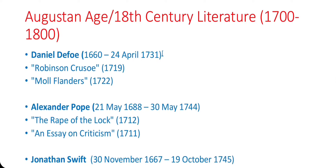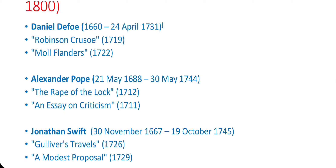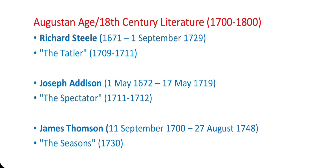Important writers from this age: Daniel Defoe — Robinson Crusoe (1719), Moll Flanders (1722). Alexander Pope — The Rape of the Lock (1712), Essay on Criticism (1711). Jonathan Swift — Gulliver's Travels (1726), A Modest Proposal (1729). Richard Steele — The Tatler (1709–1711). Joseph Addison — The Spectator (1711–1712). James Thomson — The Seasons (1730).